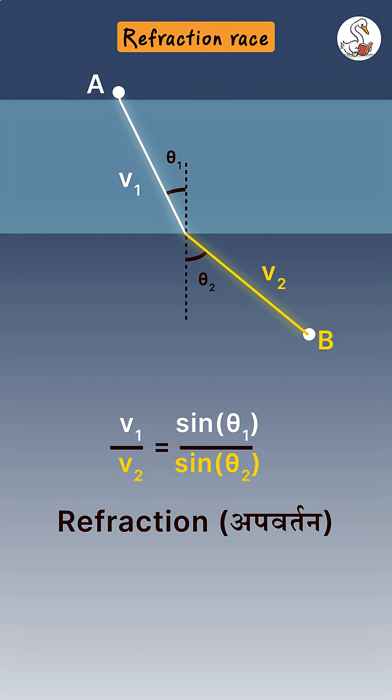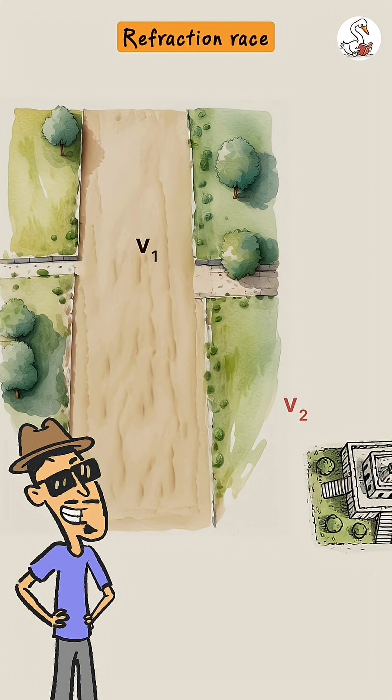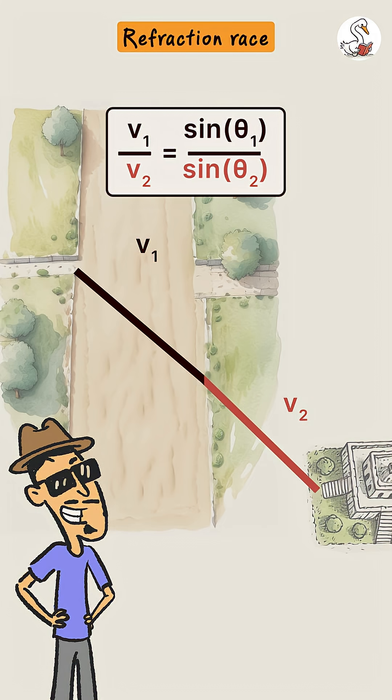This special path can be calculated using this formula. Anthony knew his speed on both sand and ground. So, just like light, he chose the path that would take the least time.